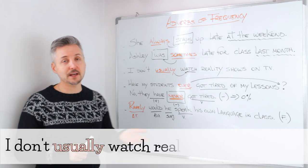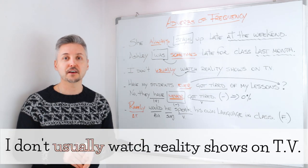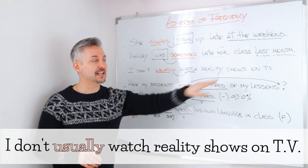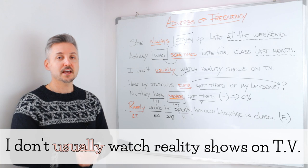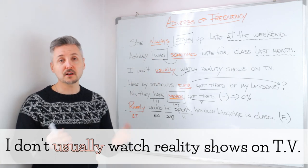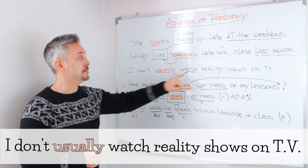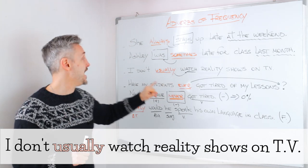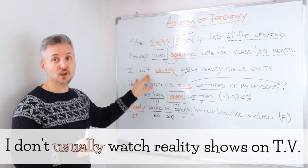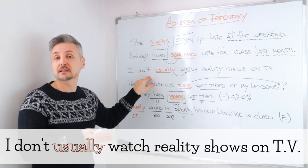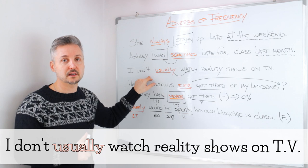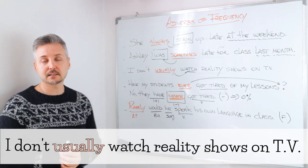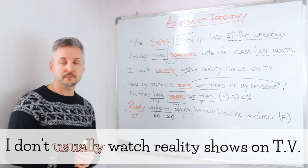Now let's take a look at the third example with a negative sentence: 'I don't usually watch reality shows on TV.' Here, the adverb of frequency is always placed before the main verb 'watch,' even though it's a negative sentence. 'I don't' — that's negative in the present simple — and 'usually' is placed just before the main verb.